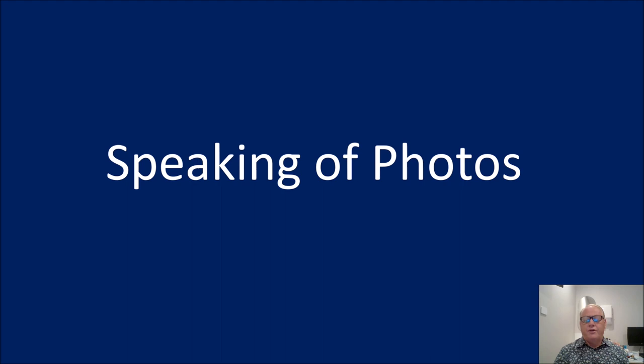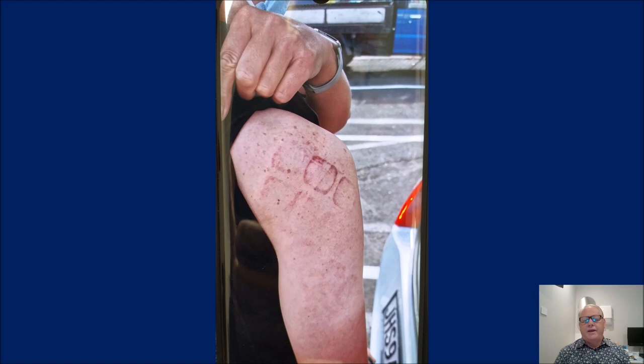Speaking of photos — some interesting things that other patients have brought in. A young lady out running with a shoulder injury. She was out running, tripped and fell against some roadwork fencing — you can see she's got the perfect pattern of the fencing on her arm.